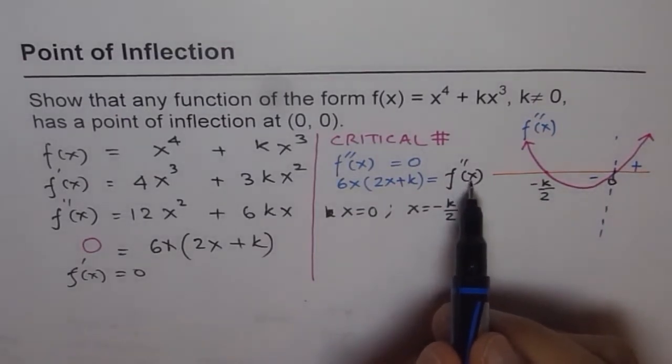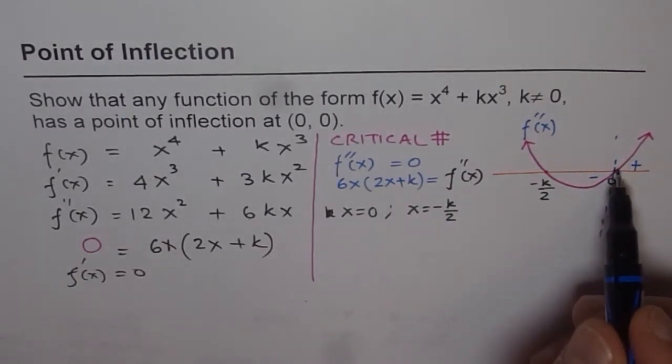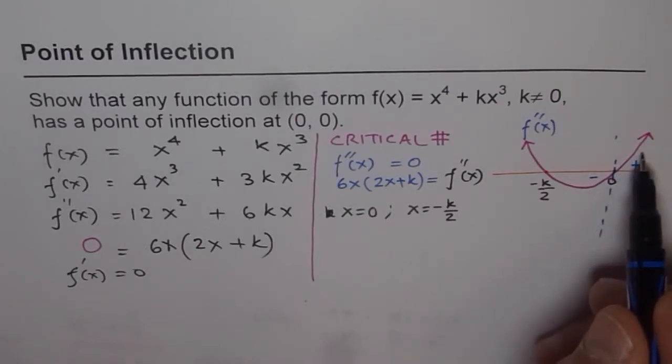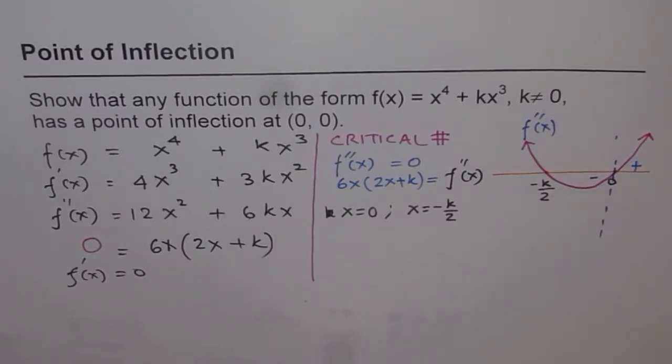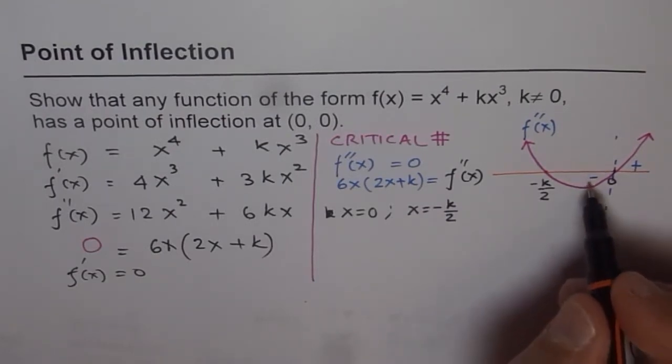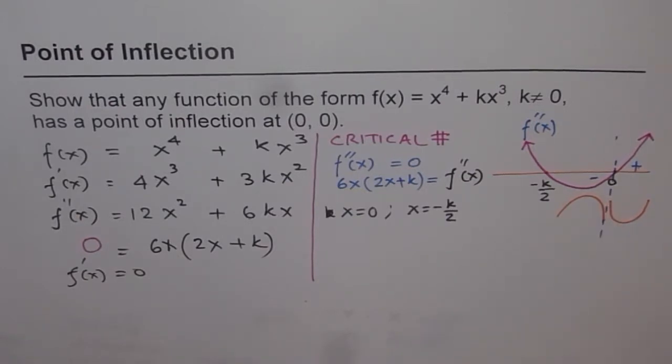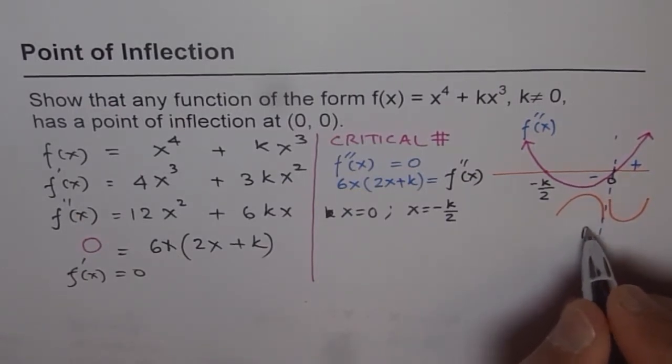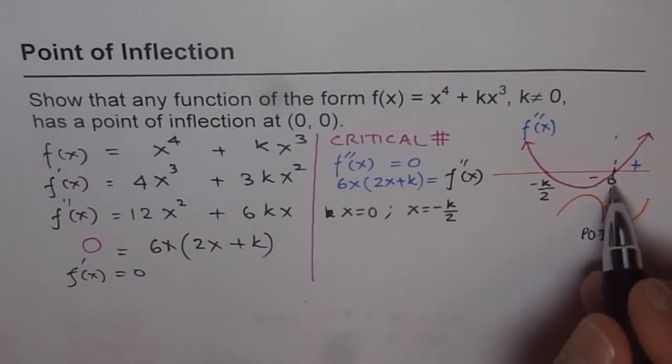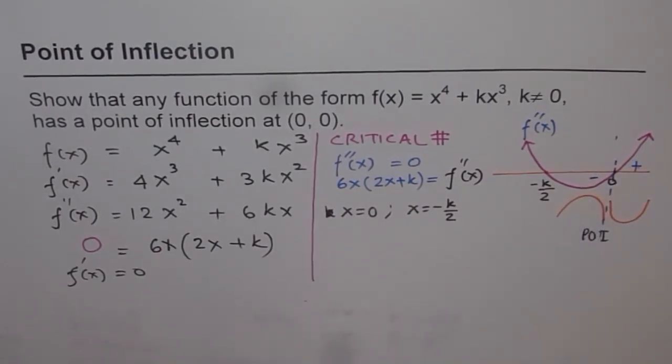Now, here f''(x) is negative before 0 and positive after 0. If it is negative, then what kind of concavity are you expecting? So if it is negative, it will be concave down. And if it is positive, it has to be concave up. Since the concavity changes, we have a point of inflection.